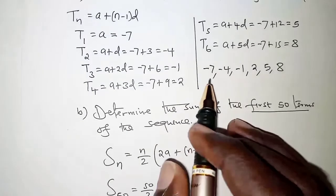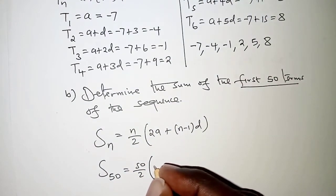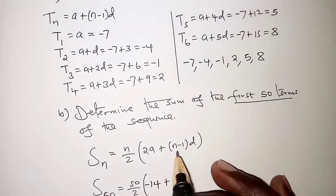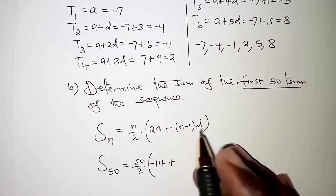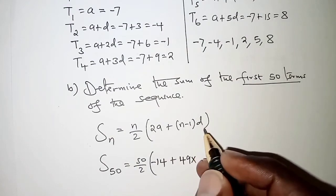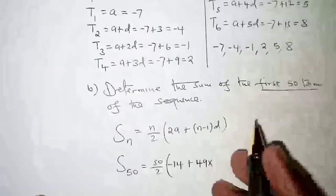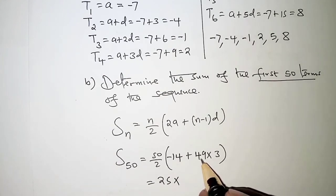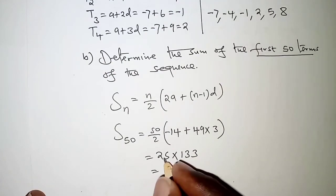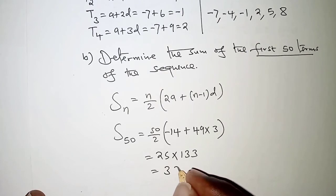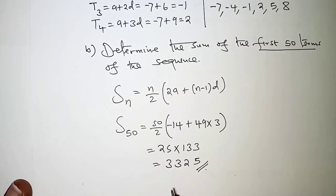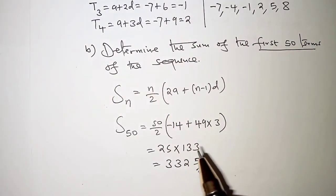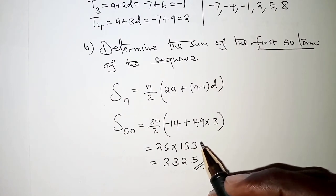Twice the first term: 2 times negative 7 is negative 14. Then we add 50 minus 1, that is 49, multiplied by d, which is 3. So we have 25 times the quantity of 49 times 3 minus 14, that is 25 times 133, which gives us 3325. That is the sum of the first 50 terms of the sequence. Thank you for watching, see you next time.